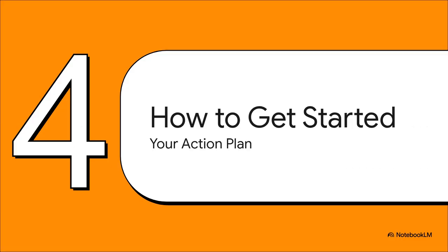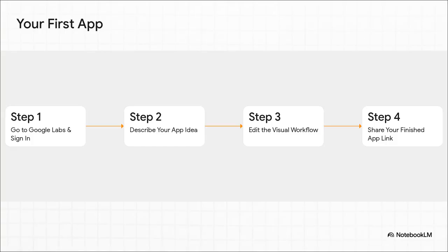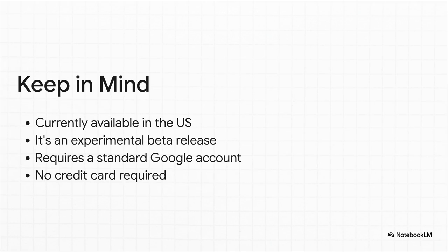You've seen what it can do. Now let's talk about how you can get started. Getting your first app up and running is just four simple steps: first, head over to Google Labs and sign in; second, just describe your app idea; third, tweak that visual workflow it creates for you; and fourth, share it with the world using a simple link. A quick heads up — right now it's only available in the US, and it's an experimental beta, so you might run into a few quirks. But the best part? All you need is a regular Google account — no credit card, no funny business.